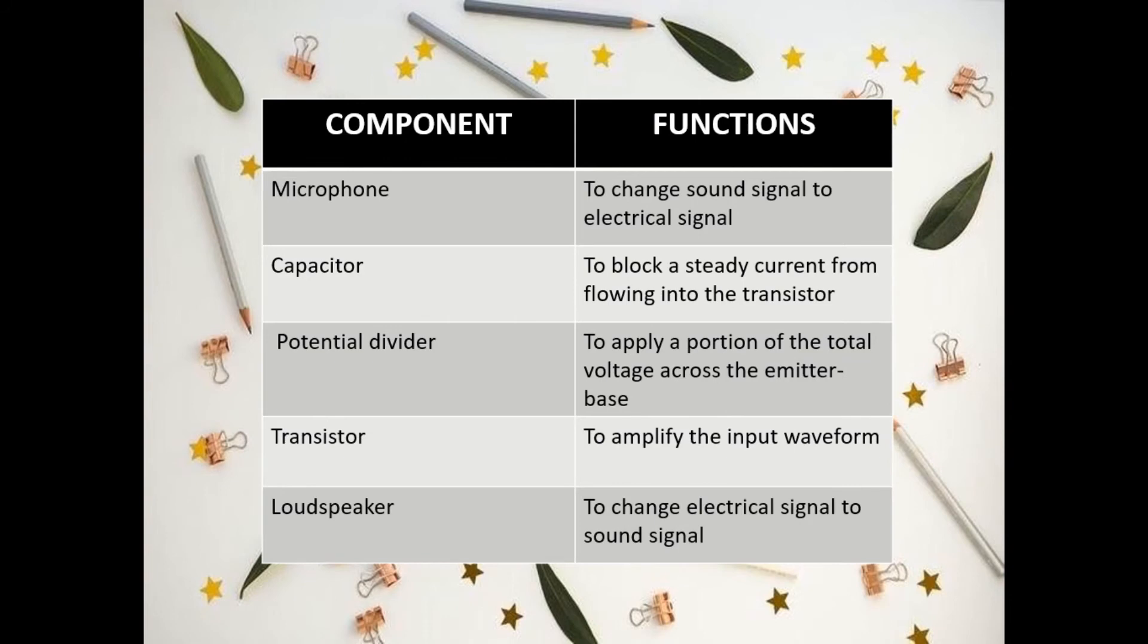Now, we should know the functions of every component. For the first one, the microphone is to change the sound signal to electrical signal. The capacitor is to block a steady current from flowing into the transistor, which is to block the direct current but allow alternating current to flow.